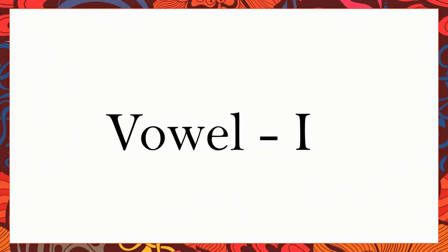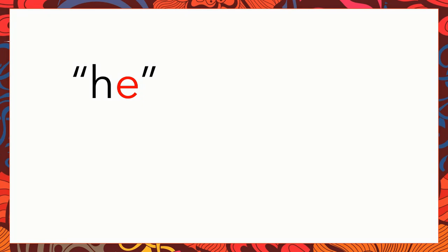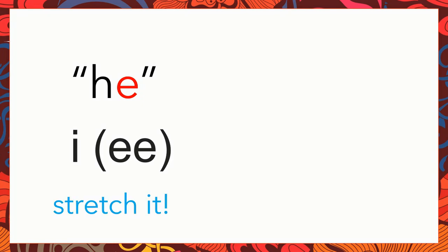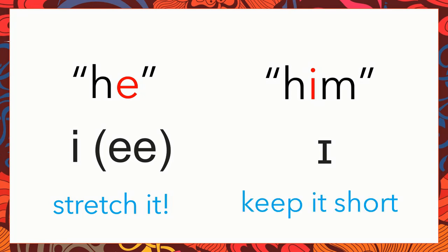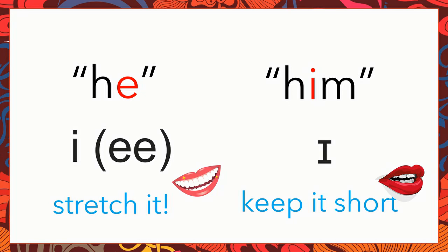So now we are going to address the two common sounds of the vowel I, which are I and E. You see the word here — he. I know you see the letter E there, but the sound is E, and you're going to stretch it like E. It's a little bit longer. And you have the word him — you see the letter I and the sound is E, which is shorter. One thing I always say to my students is when you pronounce the long E, you kind of smile, like E. And the short one — your mouth is a little bit closed.